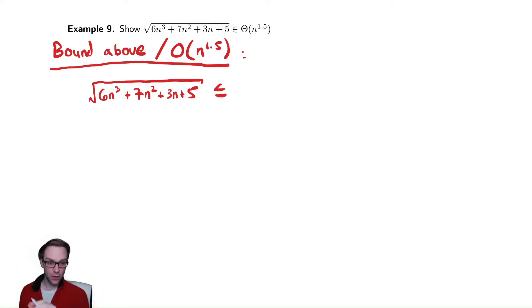Replace every positive lower order term with an equivalent higher order term. So we replace 7n squared, 3n, and 5, all with higher order terms: 6n cubed plus 7n cubed plus 3n cubed plus 5n cubed.